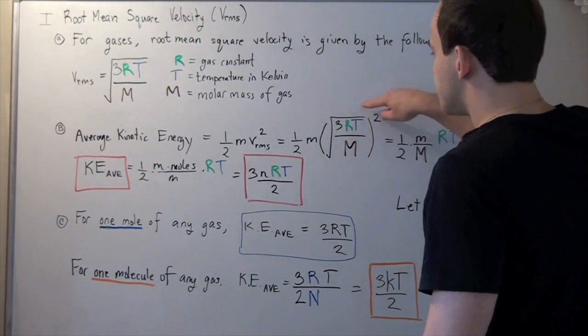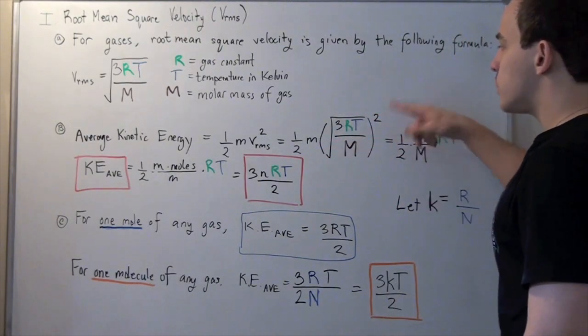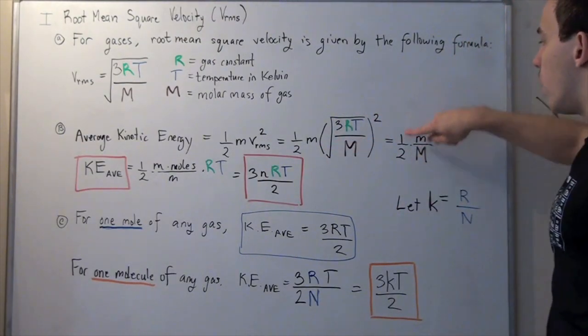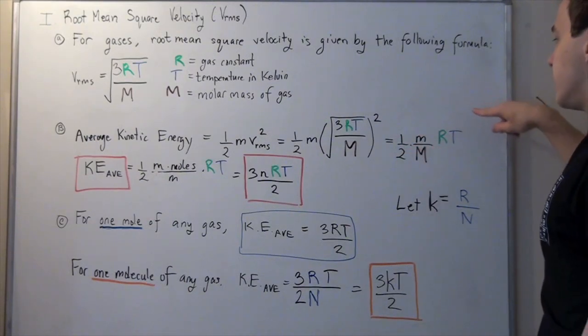The radical will disappear because the radical has an exponent of a half. A half times 2 is 1. So I simply get 1/2 times mass over molar mass times R and T.